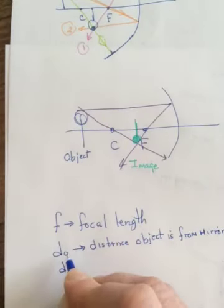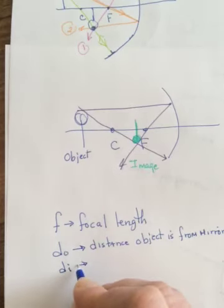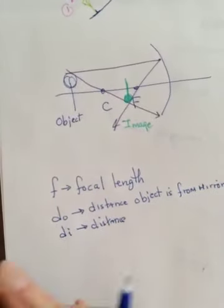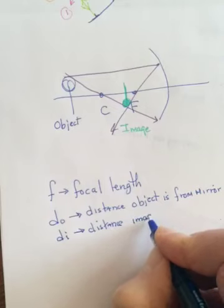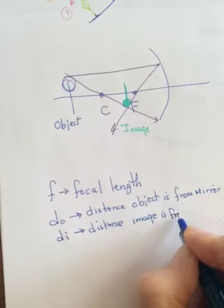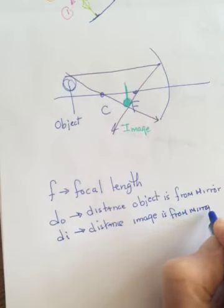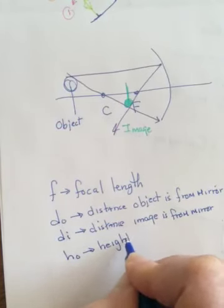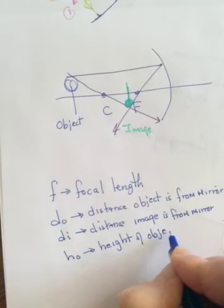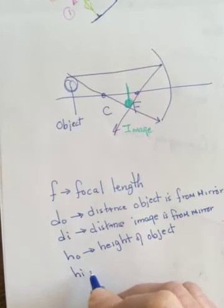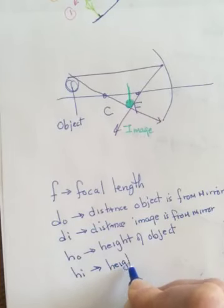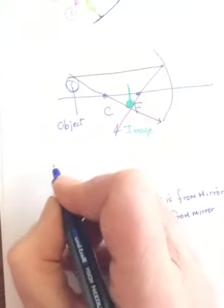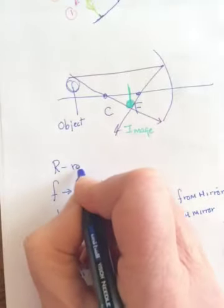We have DI, so O is for object. DI, hopefully you're guessing, distance image is from mirror. Then we also have HO, which is the height of the object. Again, O for object. And we have HI, which is the height of the image. And I guess technically we also have capital R, which is the radius of curvature.